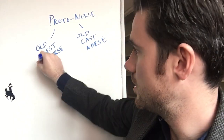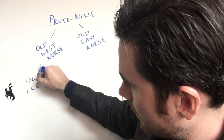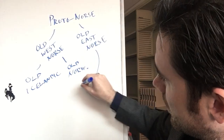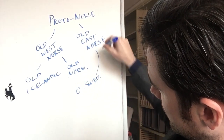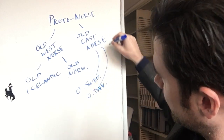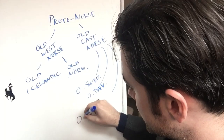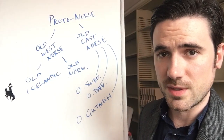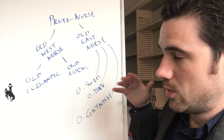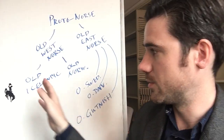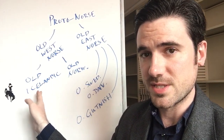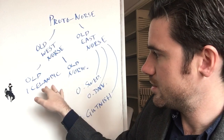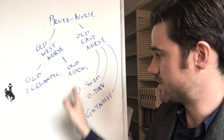From Old West Norse we see Old Icelandic and Old Norwegian. Old East Norse gives us Old Swedish, Old Danish, and Old Gutnish, which is spoken on the island of Gotland, which belongs to Sweden today. There are manuscripts in Old Norwegian and then in the Old East Norse dialects like Swedish, Danish, and Gutnish.